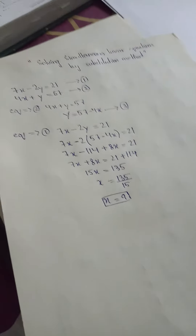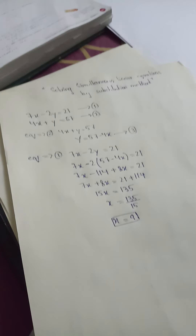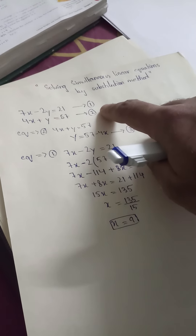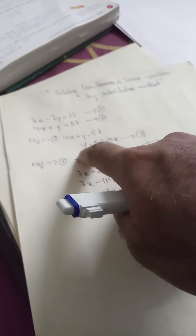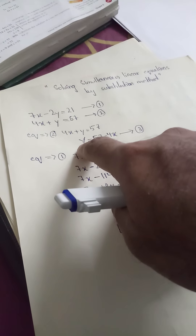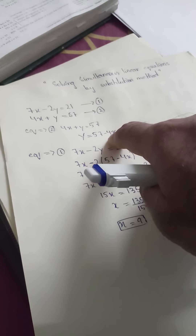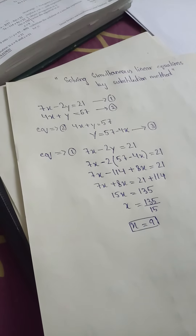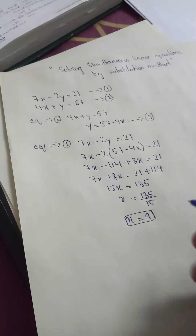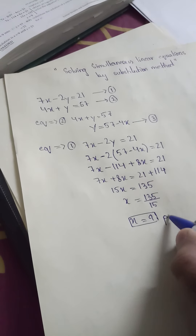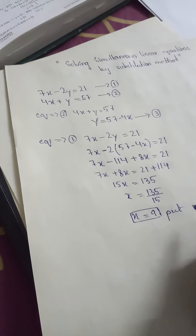Dividing both sides by 15 gives x equals 135 divided by 15, which equals 9. So I picked an equation based on its coefficient, made a variable the subject, substituted the expression into the other equation, and found the value of x. I have successfully achieved half my target — I have found the value of x.